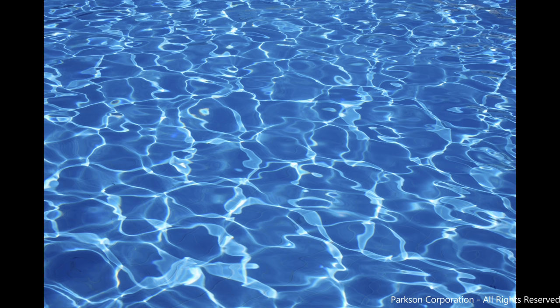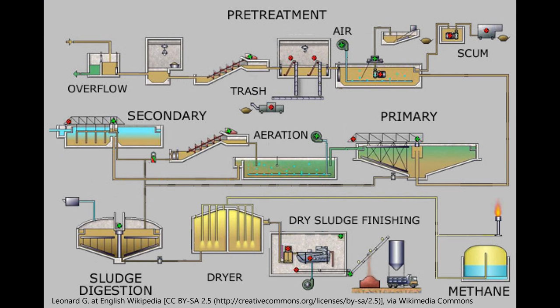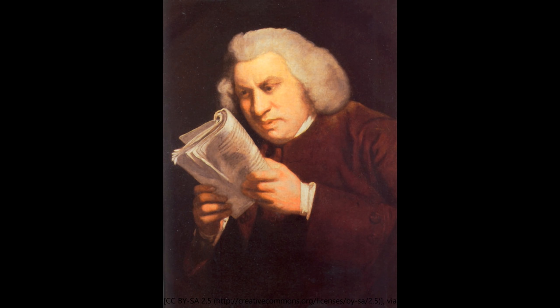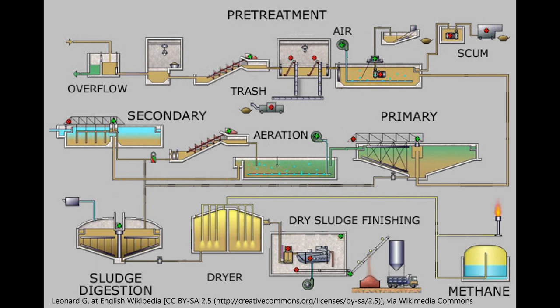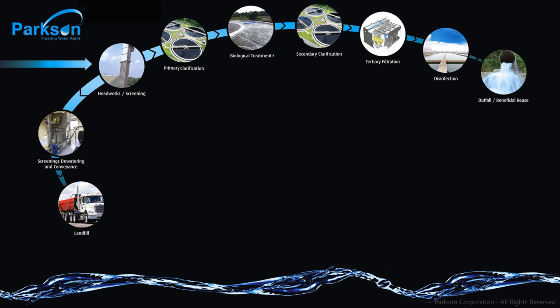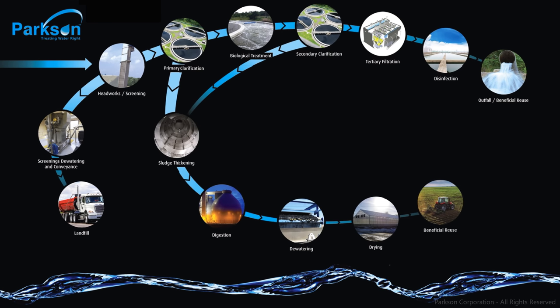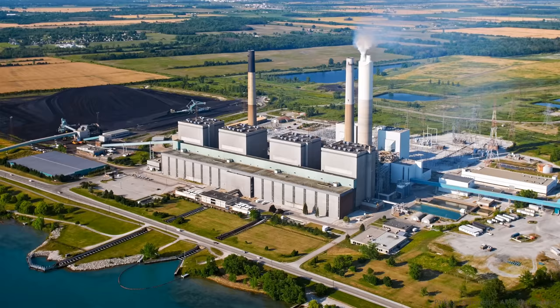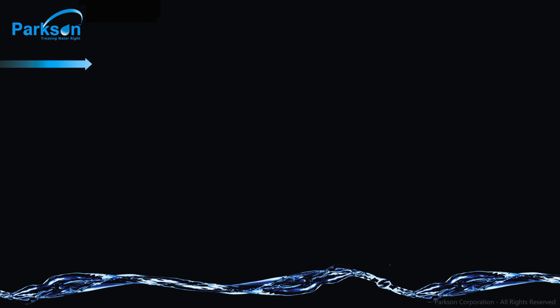Typically, when discussing this subject, we find ourselves staring at a pretty complex and confusing flow diagram. However, for this video, we're going to use a much more simplified version depicted here, which has three basic paths. Raw water from homes, businesses, and industries enters here.